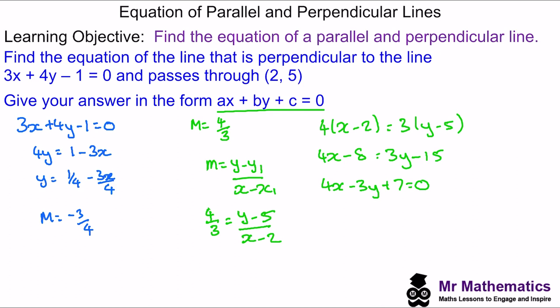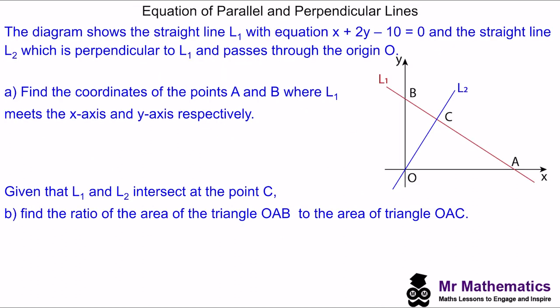Let's try two more questions — here's an exam-style question. We have line L1 and line L2, and we've been given the equation of L1. We've been asked to work out the coordinates of A and B, and to find the ratio of the area of triangle OAB to the area of triangle OAC. You can pause the video and resume it when you're ready to try this yourself.